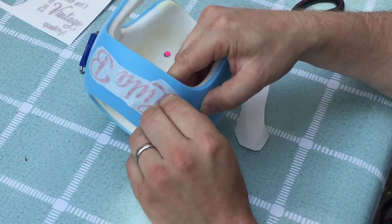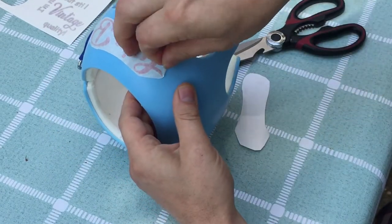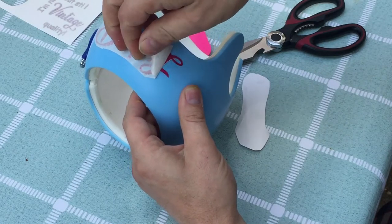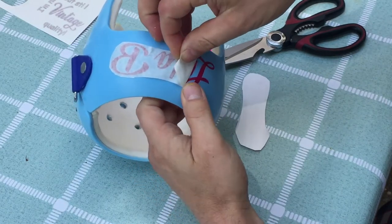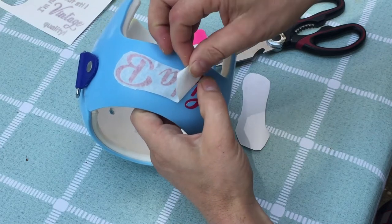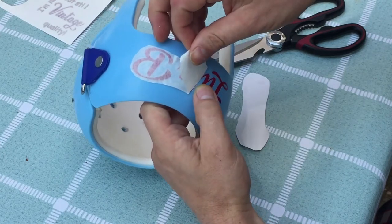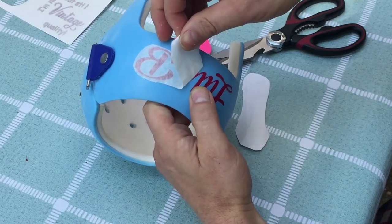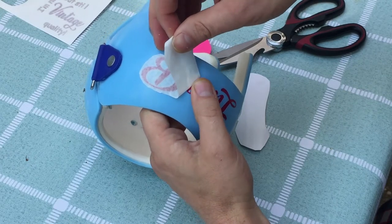I always slowly peel back the transfer tape just to make sure that something doesn't want to come up with the transfer tape and then distort or tear. When I go slow, if I see any issue, I can just push that vinyl back down on the helmet.